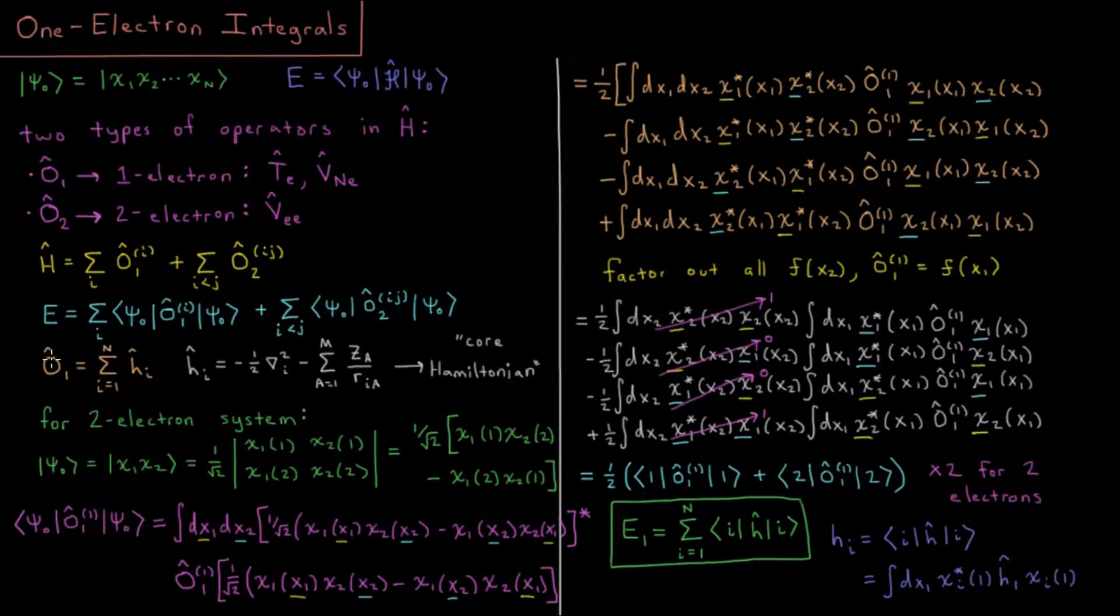This tells us that for our one-electron energy, for this whole term here, the entire sum, what we get is that the one-electron energy is just a sum from i equals 1 to n of the expectation value of the core Hamiltonian for that particular electron.